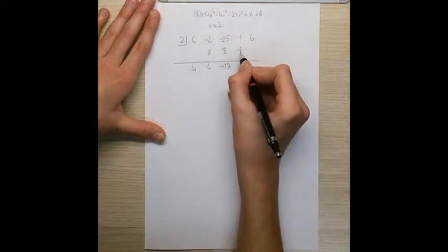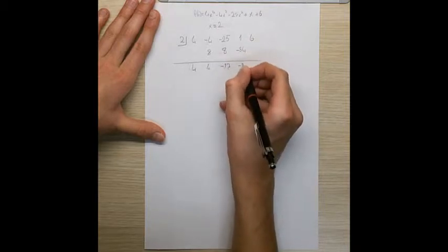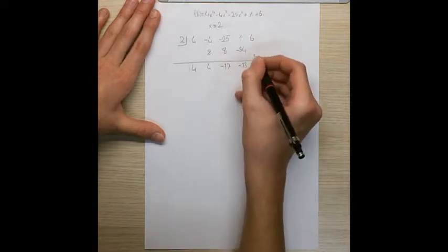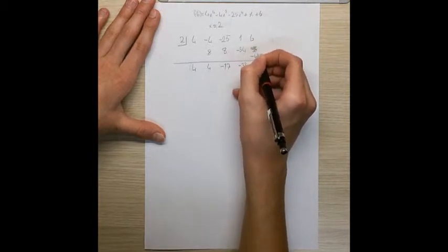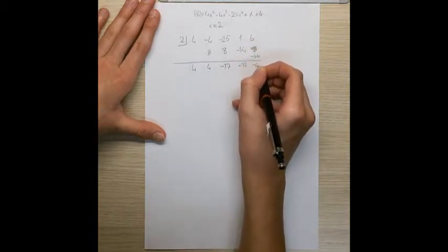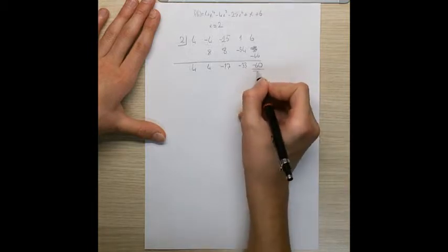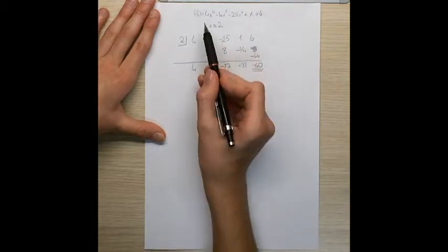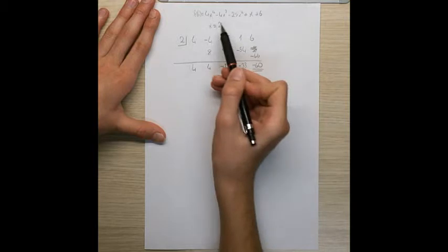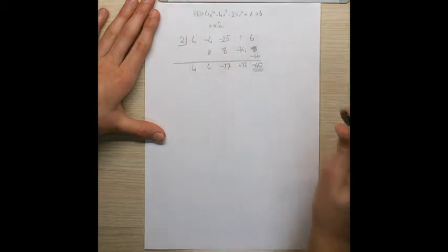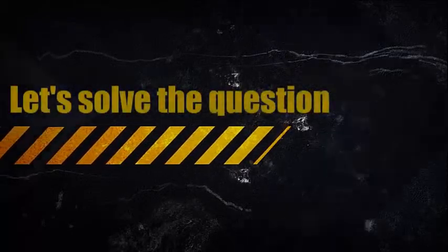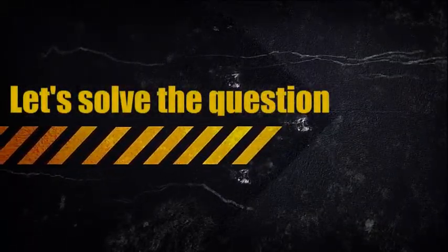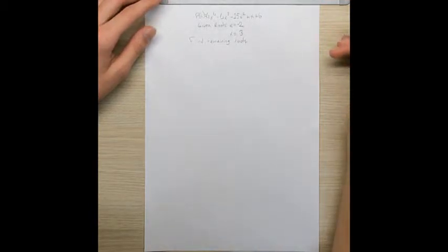I will do this until it's finished: negative 34, negative 33, negative 66, negative 60. This number gives the value of the function when we plug 2 in place of x. Now you know how to do synthetic substitution.